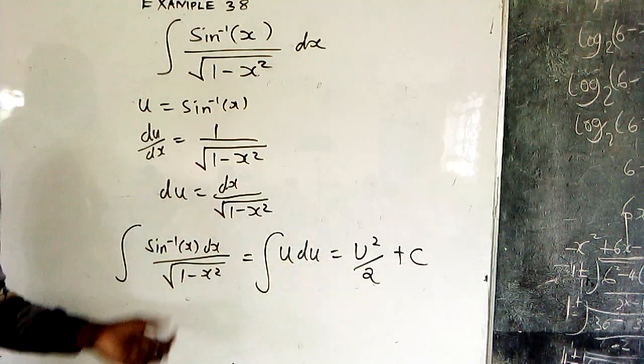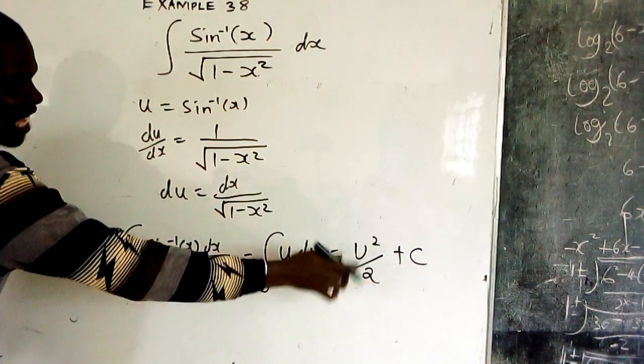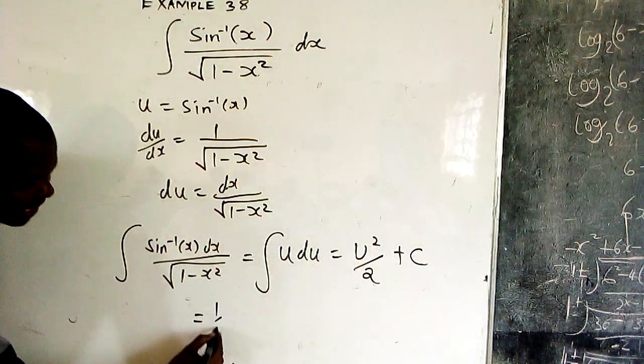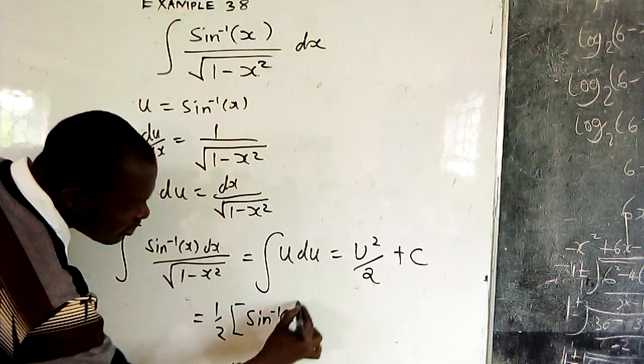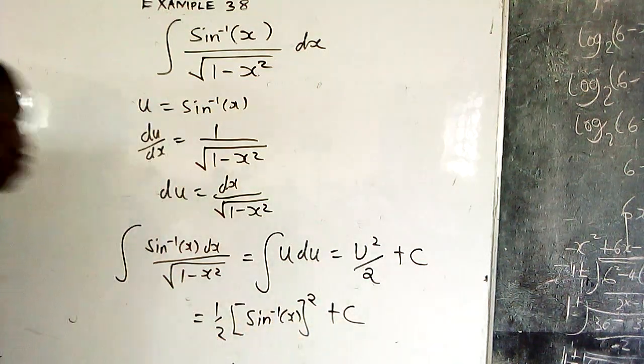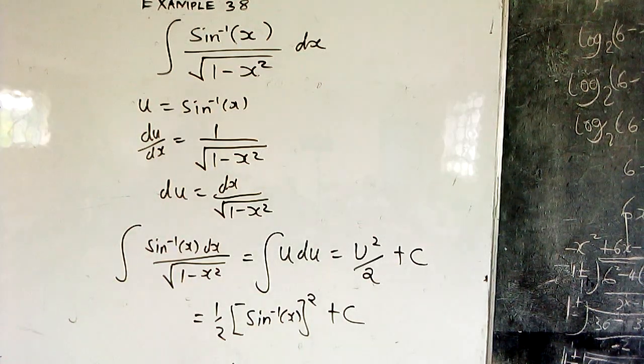Then you substitute your u. What is u? Sin⁻¹(x). So u²/2 is a half u². This means it is (1/2)[sin⁻¹(x)]² plus your arbitrary integration constant C.